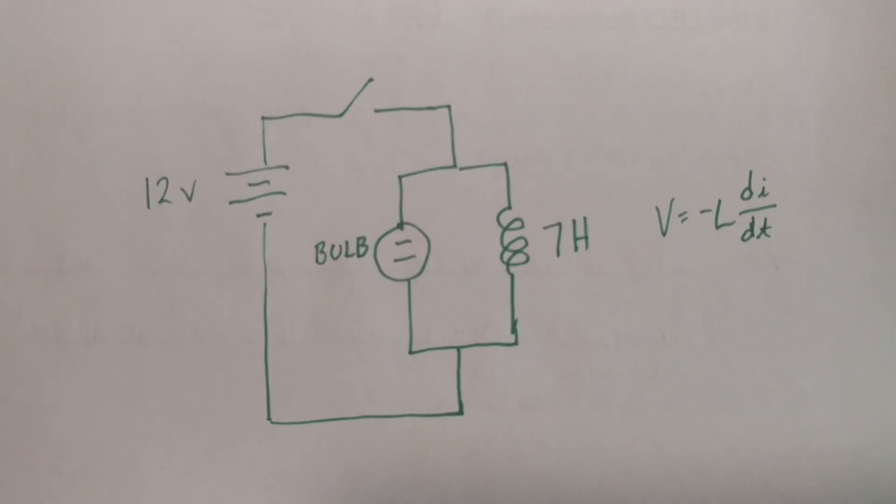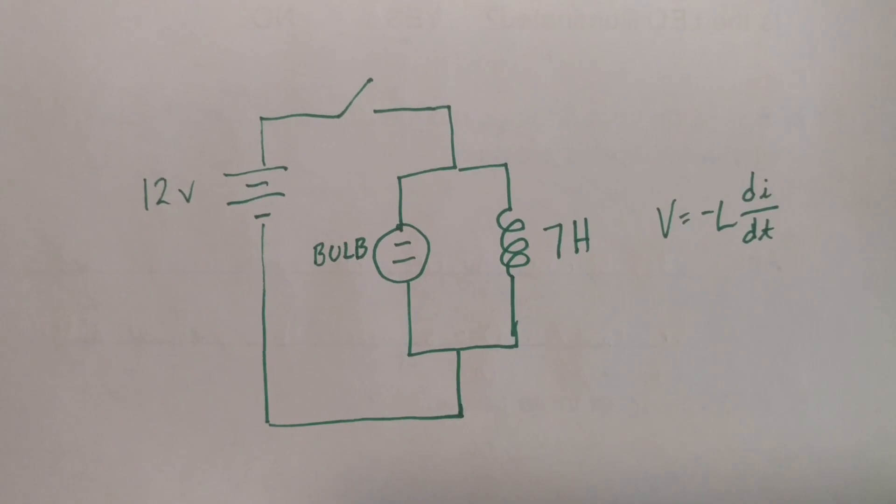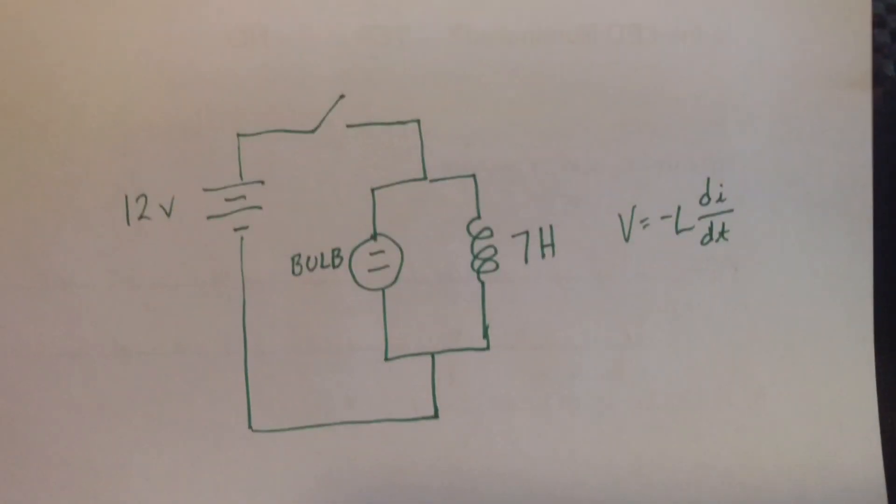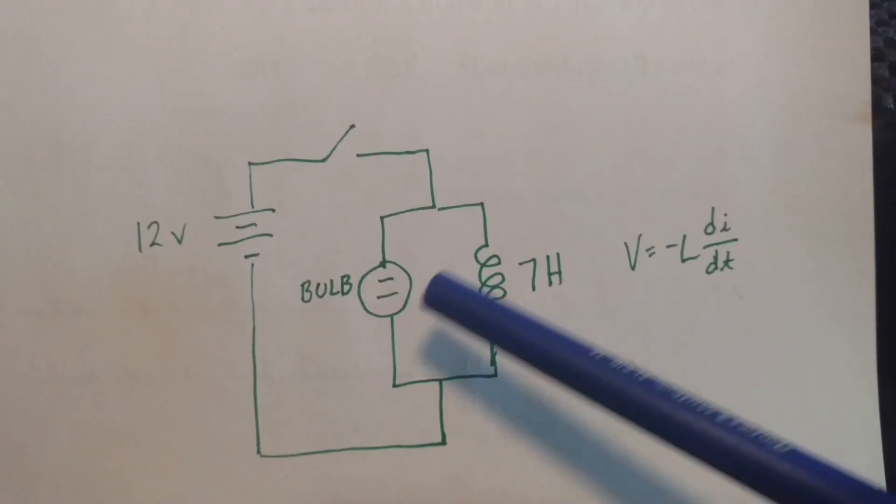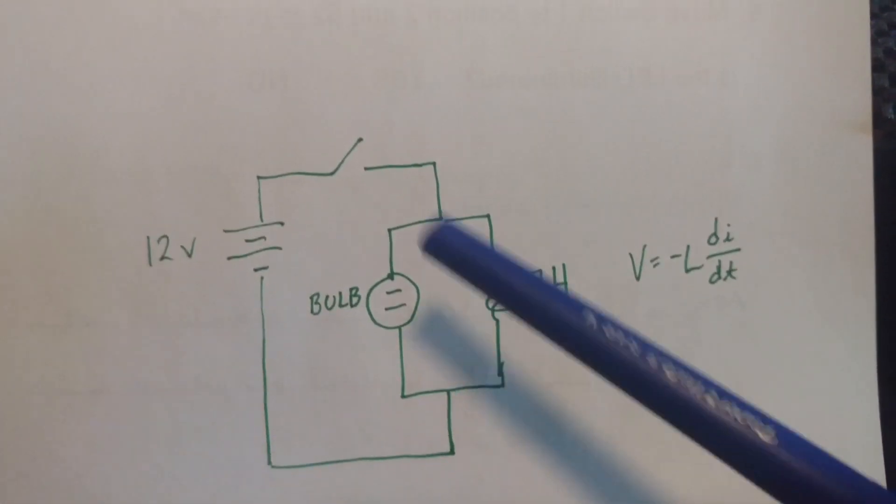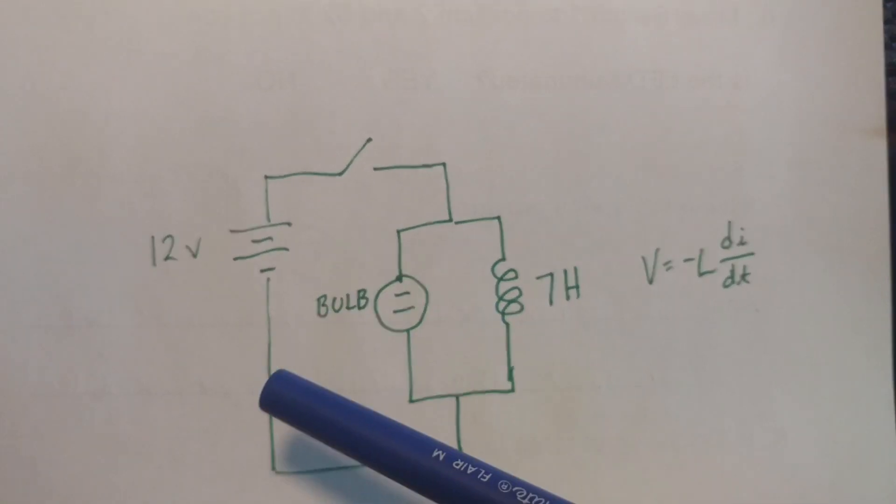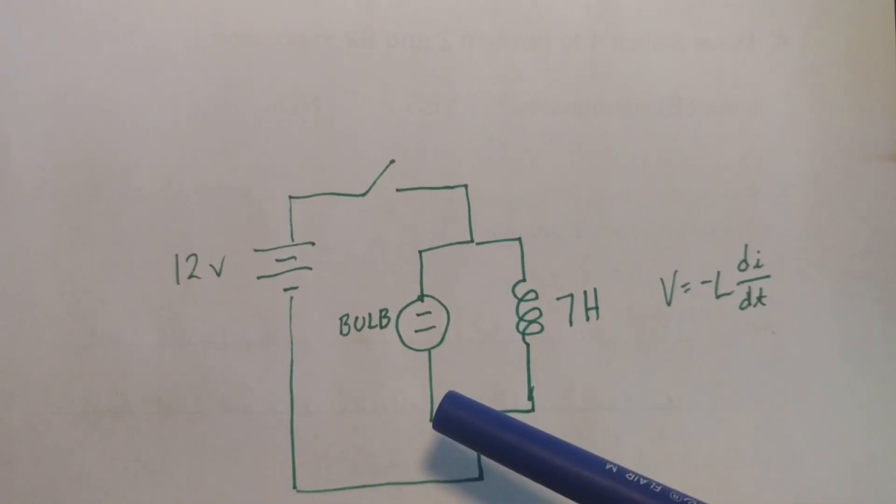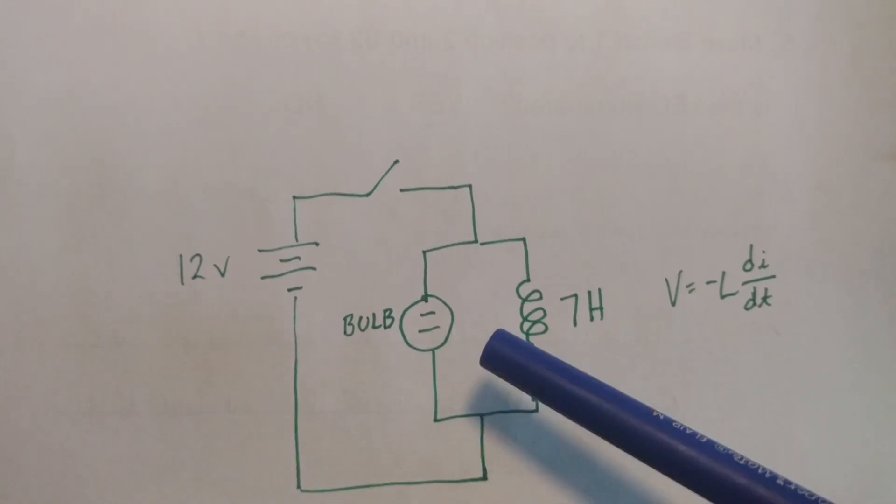In order to understand some inductor characteristics let's take a look at this circuit here. I have 12 volts in parallel with a neon bulb and an inductor. There's a switch here so if I close this switch I will get the same 12 volts across the bulb and the inductor because they're in parallel.